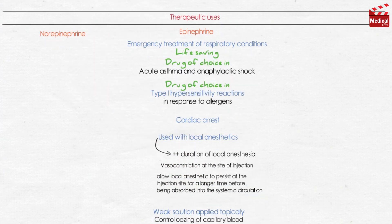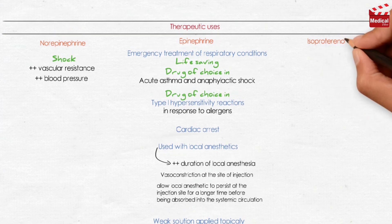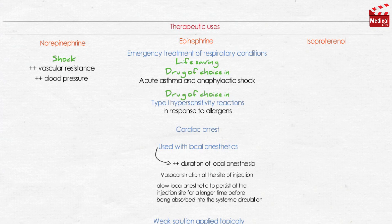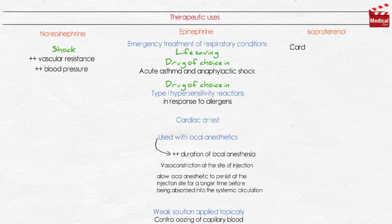Norepinephrine is used to treat shock because it increases vascular resistance and thus increases blood pressure, but it has no other clinically significant uses. The use of isoproterenol has largely been replaced with other drugs because of its non-selectivity, but it may be used as an intravenous injection in cases of cardiac arrest, heart block, and shock, and also in management of bronchospasm during anesthesia.